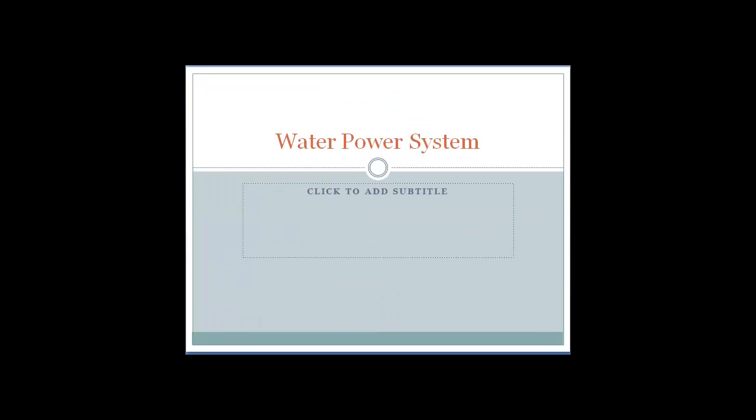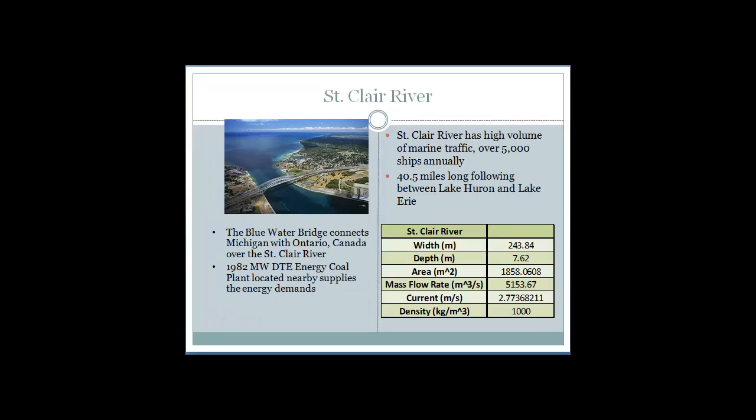Now looking at the water powered system, St. Clair River was chosen for this location considering the 40.5 mile long river connects between Lake Huron and Lake Erie. The characteristics of the river are located in the table.